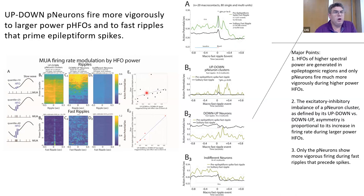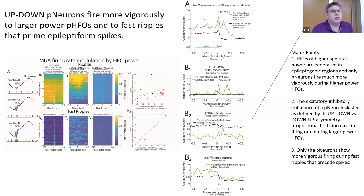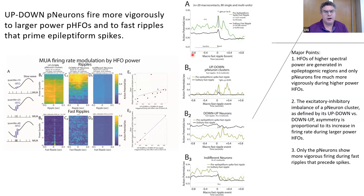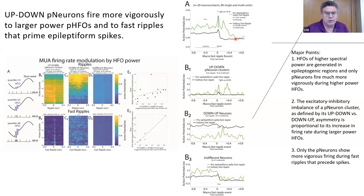Panel B shows that neurons with a preference for the up-to-down transition fired more vigorously to larger-power HFOs than lower-power HFOs. Panel E shows that the steepness of firing as a function of HFO power correlated with the effect size of the up-to-down firing preference, suggesting the degree of excitatory-inhibitory balance experienced by an individual neuron corresponded with how vigorously it would fire to larger-power HFOs. The neurons showing a preference for the up-to-down transition exhibited the most vigorous firing to fast ripples preceding spikes, supporting their identification as pathological neurons.